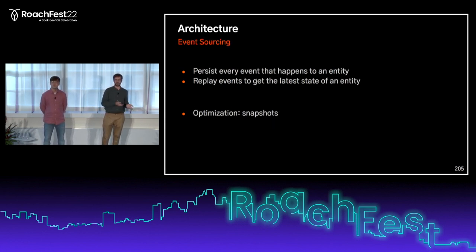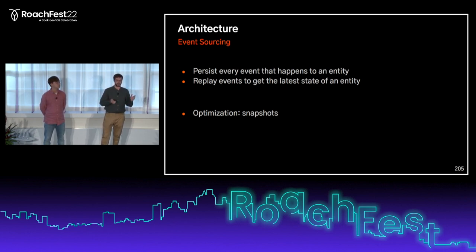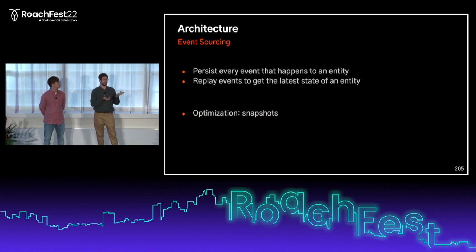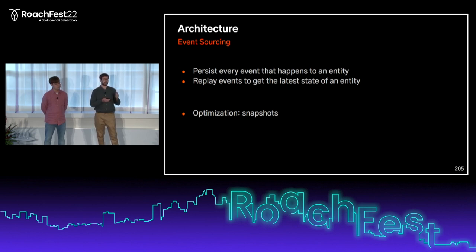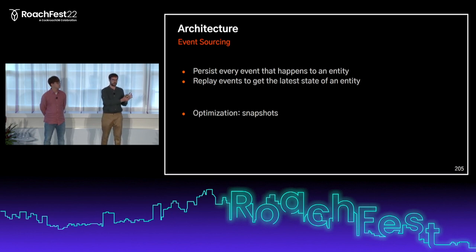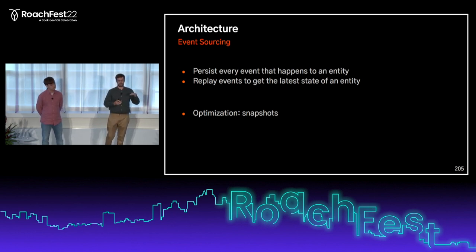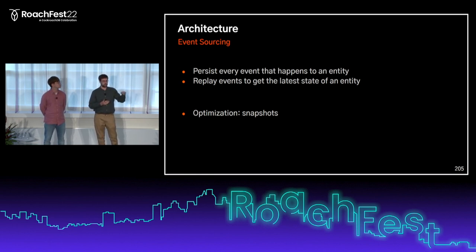So we went for event sourcing. That means every time something changes, instead of saving the new state, we save an event that describes what changed — for example, 'received 10 coins.' When we want to load a user state, we start from an initial state and replay all the events that happened. We also store snapshots once in a while to avoid replaying too many events — every 300 events we save a snapshot, which is just the whole user state. We start from the latest snapshot and replay only the events that happened after it.